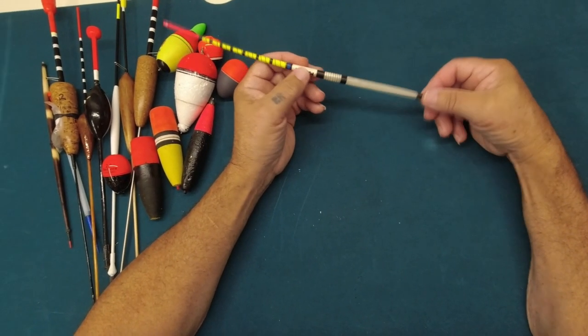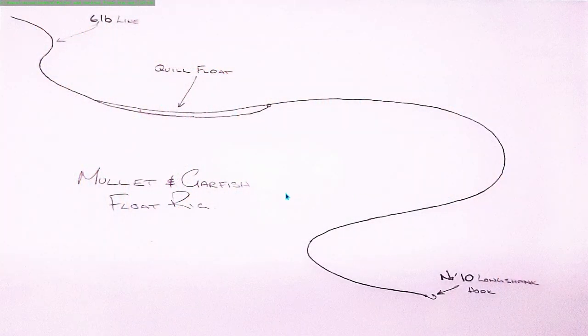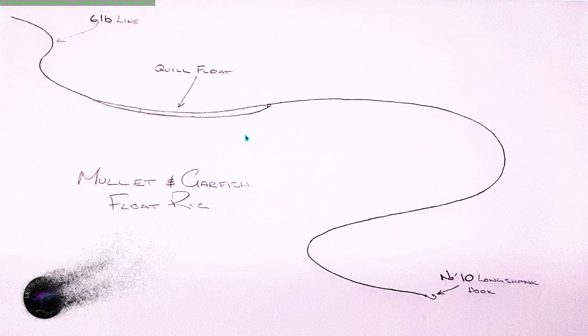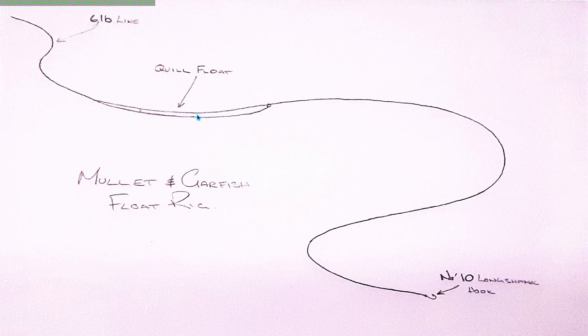For catching mullet and garfish with these quill floats, this is the way you rig up. This is the simplest float rig of them all. I've got 6 pound line running straight down to the hook. I like using quill floats because they're nice and light and sensitive. It's a sliding float so you just put two little rubber bands around it and it can slide up and down the line. You can have the depth you want. If you want to make this float stand up on end, you just add a few little split shots or a sinker and it will stand up on end.